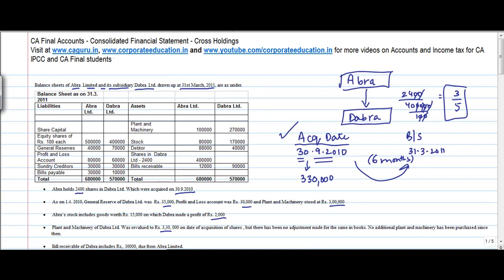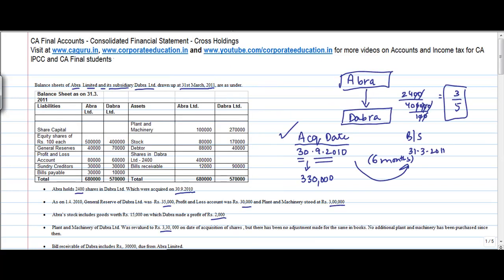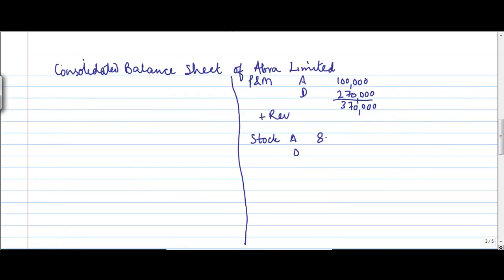Stock. Stock basically includes 80,000 for Abra and 1 lakh 70,000 for Dabra. Let me move to stock. Stock Abra Dabra, 80,000 and 1 lakh 70,000. There is some adjustments that we will come back afterwards.